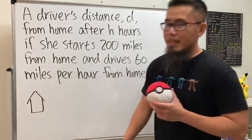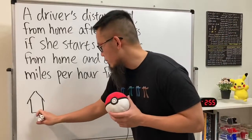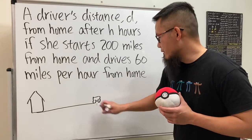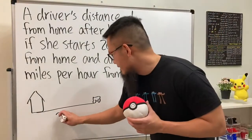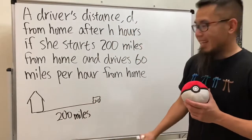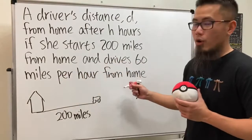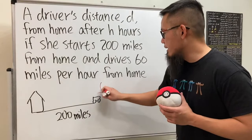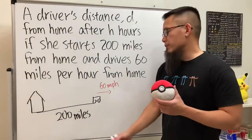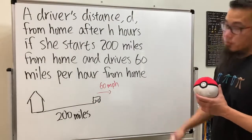Let's say this right here is her home, and she starts 200 miles away from home — so maybe she is somewhere right here. This is her car and the distance between her house and the car is 200 miles. She's driving at a speed of 60 miles per hour away from home, so she's going on a road trip, starting at 200 miles and keep driving away from home.